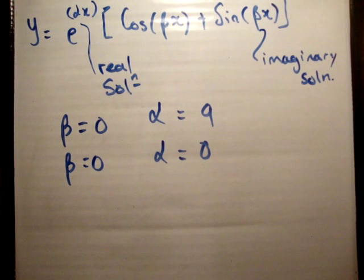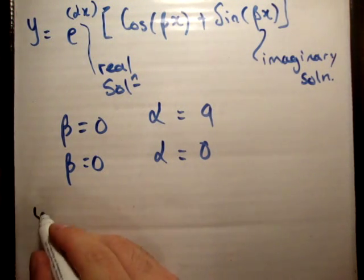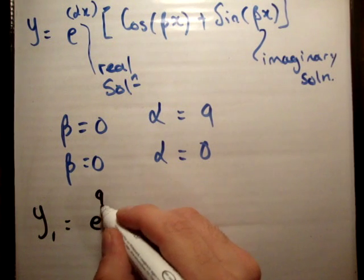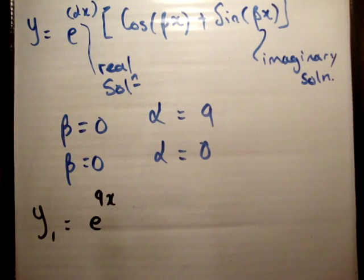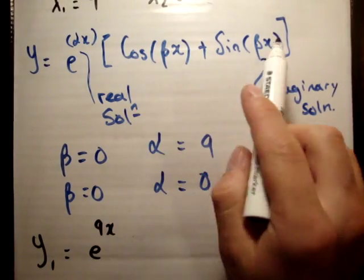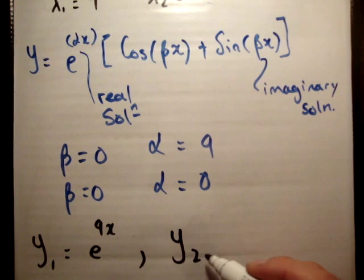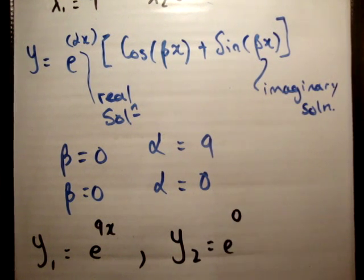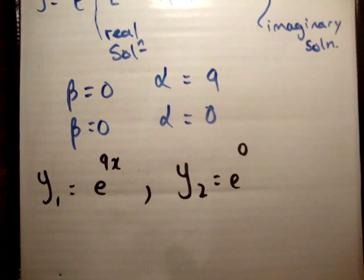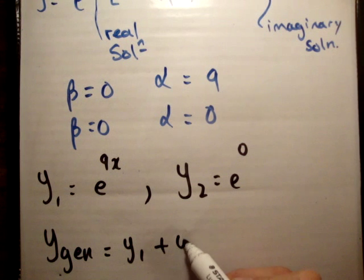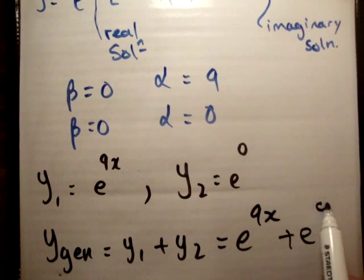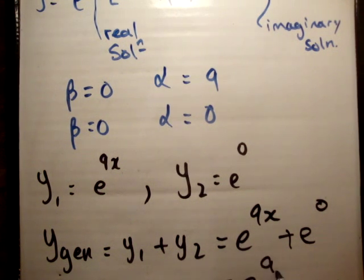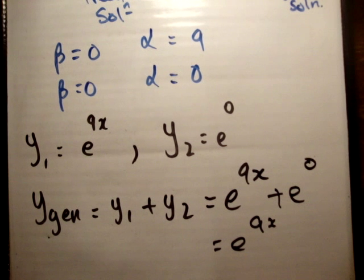Alright? So let's plug those in, and we're going to get two solutions. We're going to get that y1 is equal to e to the 9x. And know, of course, that the cos of 0 is equal to 1, the sine of 0 is equal to 0. Therefore, this is just going to be all multiplied by 1. And y2 is going to be equal to e to the 0. Alright? So in actual fact, in this case, we're going to get one solution. So the general solution is equal to y1 plus y2 is equal to e to the 9x plus e to the 0 equals e to the 9x.